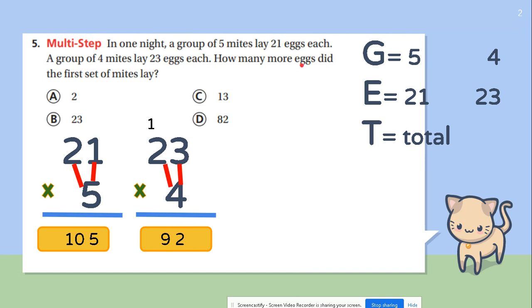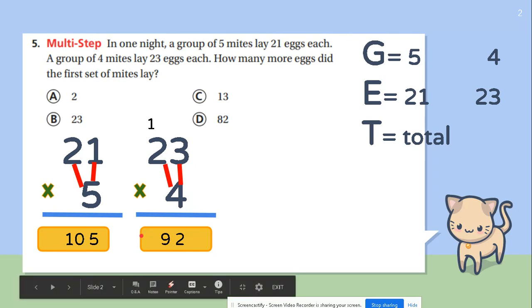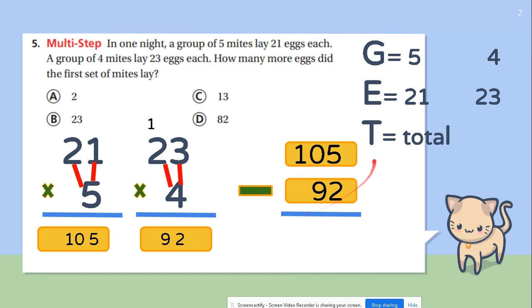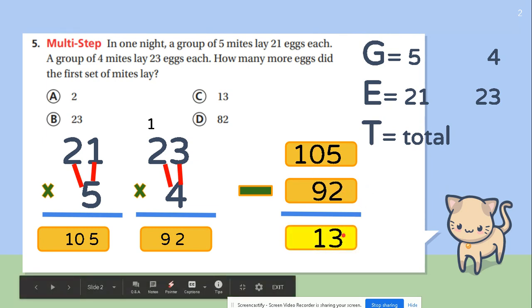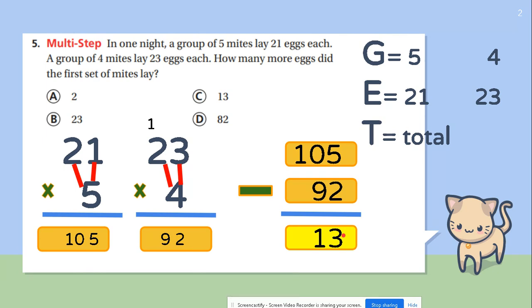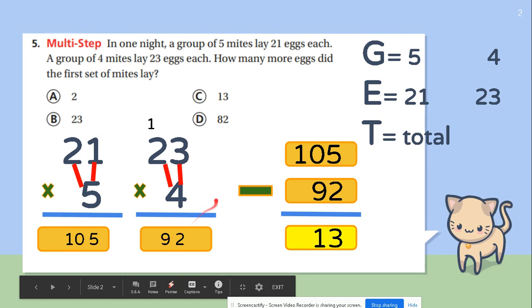How many more eggs did the first set of mites lay? So we want to know the difference between 105 and 92. We're going to subtract. 5 minus 2 is 3. 10 minus 9 is 1. So my final answer is 13 after I do step 1, step 2, and step 3.